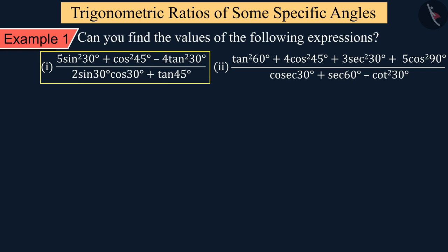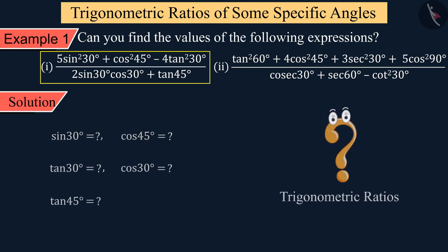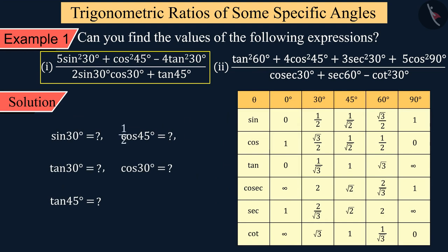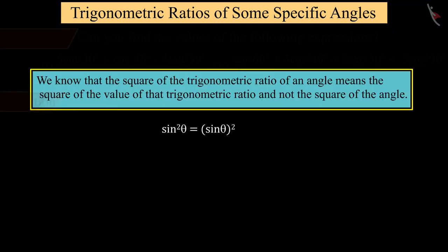Here we can see that to solve this we will need the values of sin 30°, cos 45°, tan 30°, cos 30°, and tan 45°. We get the values of all these with the help of the table of trigonometric ratios.